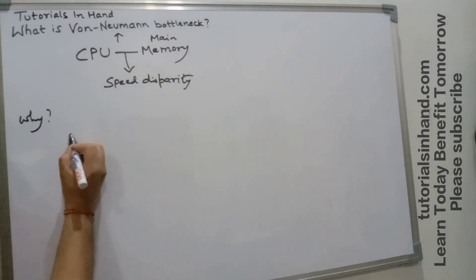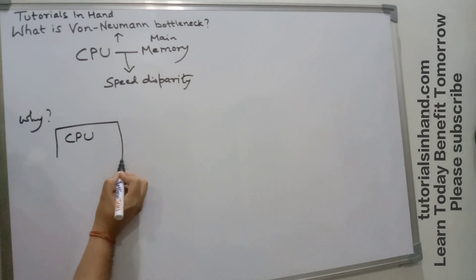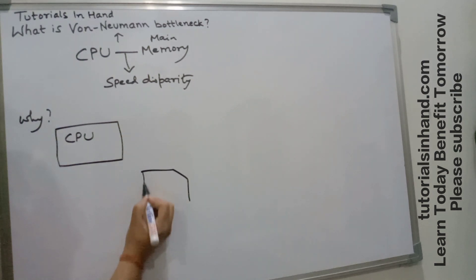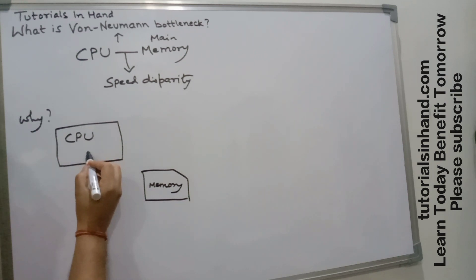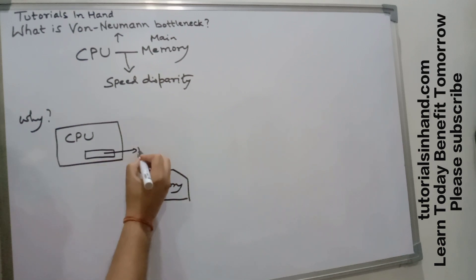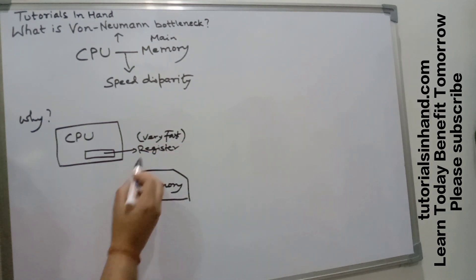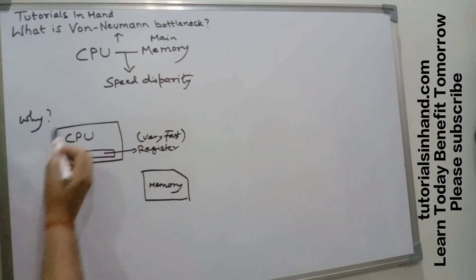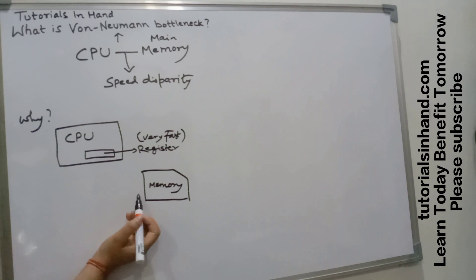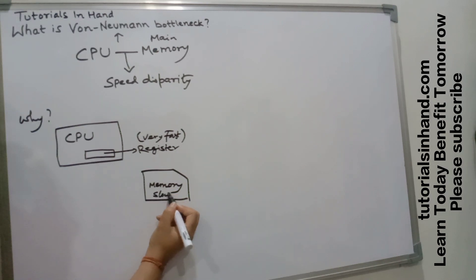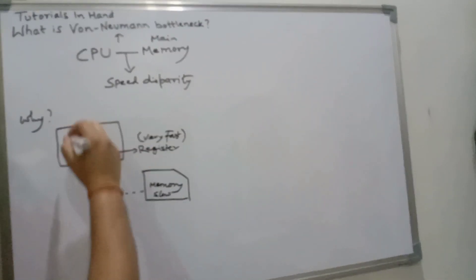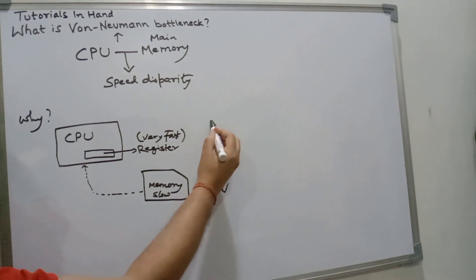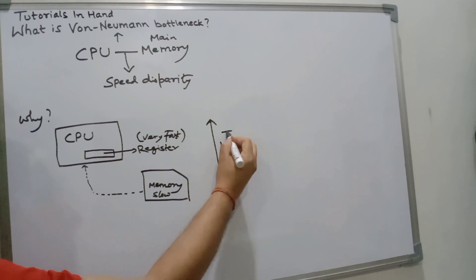If we look at the CPU and main memory: the CPU processes data and instructions at a much rapid pace because it makes use of registers which are set up within the CPU itself. These registers are very fast, so they provide data and instructions to the CPU at the rapid pace it requires. However, main memory is slow, so it provides data and instructions to the CPU at a slower rate, causing a time lag.